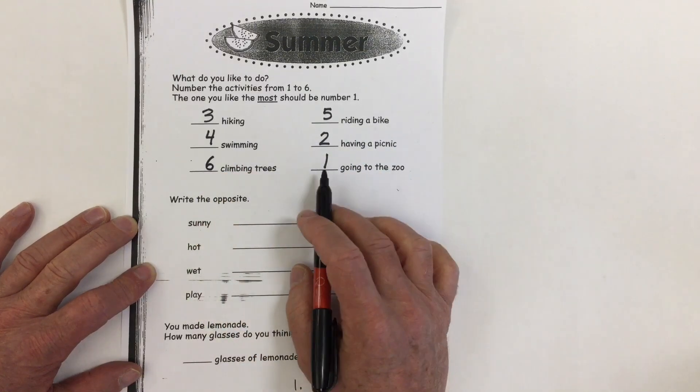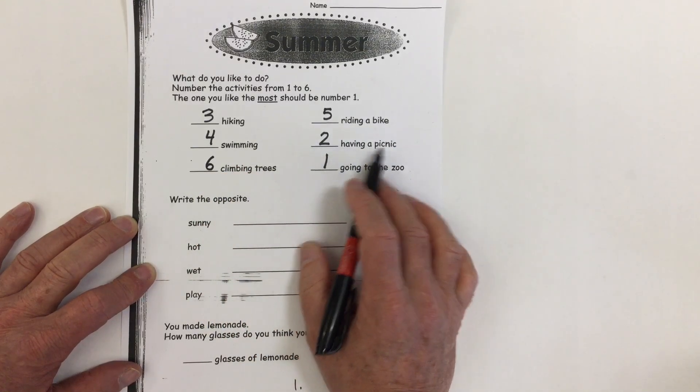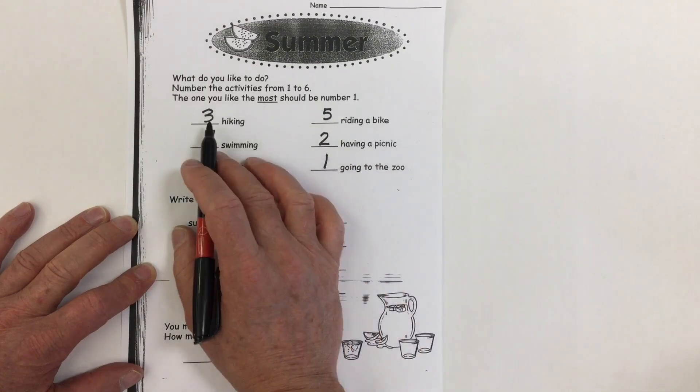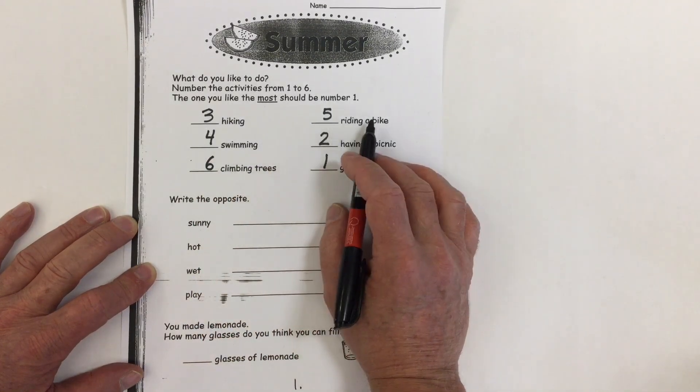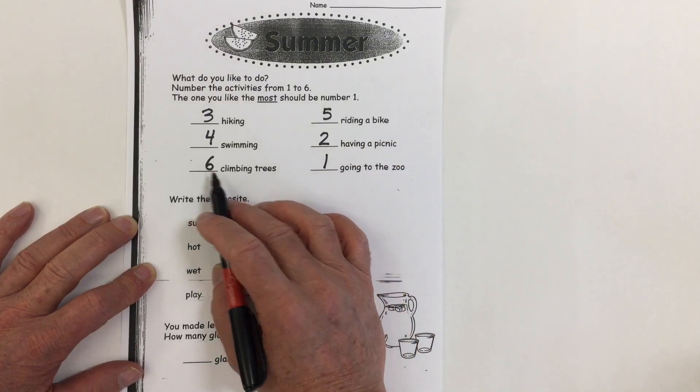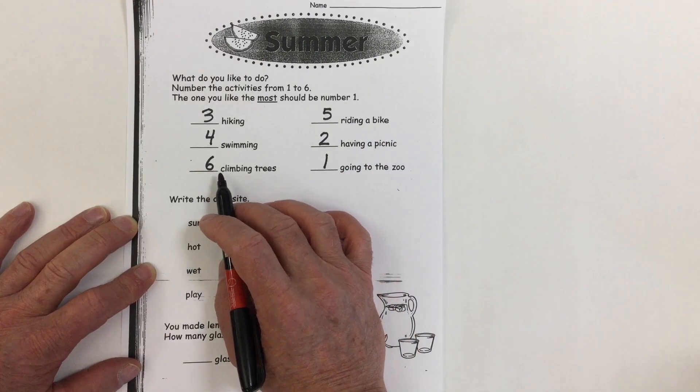So for me personally, going to the zoo would be my favorite. Then having a picnic would come next. Then I like hiking, swimming, and last riding a bike. And least, climbing trees. I'm just too big now to climb trees.